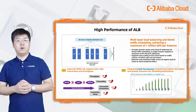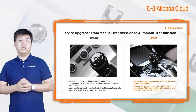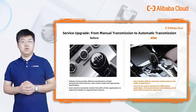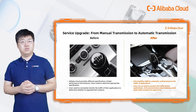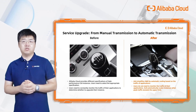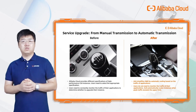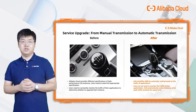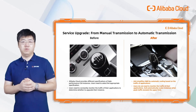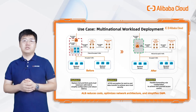Next, let's look at O&M. In the age of CLB, you had to select appropriate specifications and constantly monitor traffic to determine whether to upgrade the instance. ALB simplifies O&M by automatically scaling up and down based on application traffic — you don't need to monitor the ALB instance at all, and can focus entirely on your business logic. It's just like upgrading from a manual transmission to an automatic — it makes life much easier.